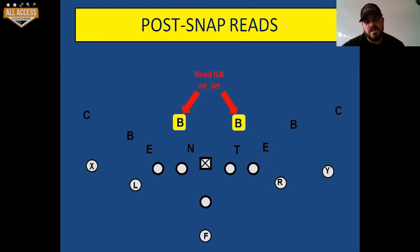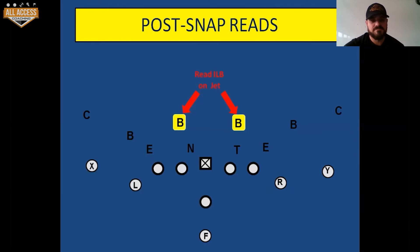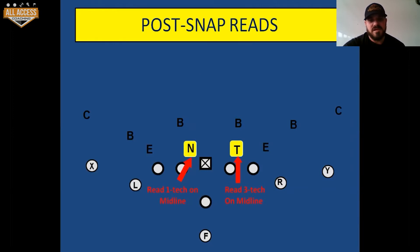We're going to read inside linebackers on our jet. We're going to pull the guard and read those backers when they fly out. Our fullback ends up being our lead block around that when that frontside backer leaves. I haven't run this too much this past year, but I think it's a great fit in the pistol - running some midline.